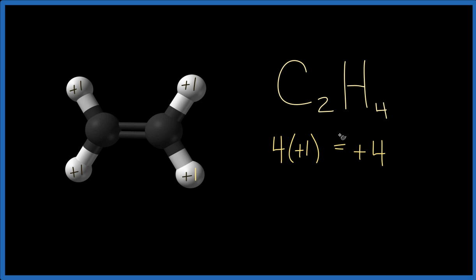To balance that out, we're going to need to have a minus four. So plus four plus something's going to give us zero, that neutral atom, and that's going to be the minus four. So each one of these carbons is going to be minus two.